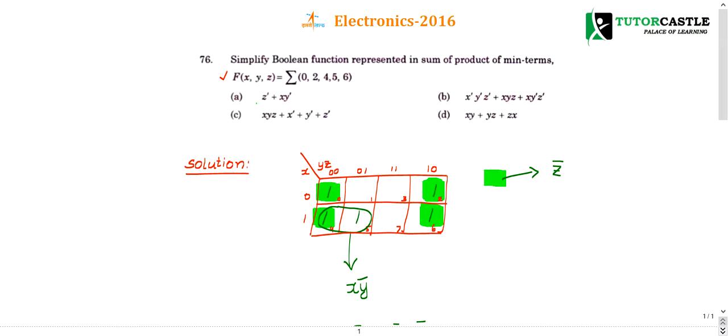F is equal to F of x, y, z is equal to 0, 2, 4, 5, 6. Now you just put in the K-map. Everybody knows how to solve K-map. So just look over it once again and try to get the answer.